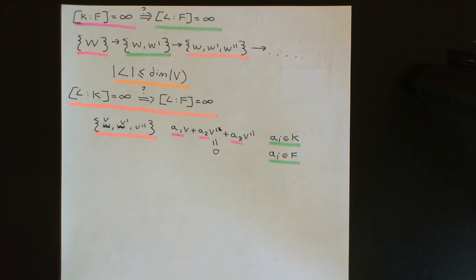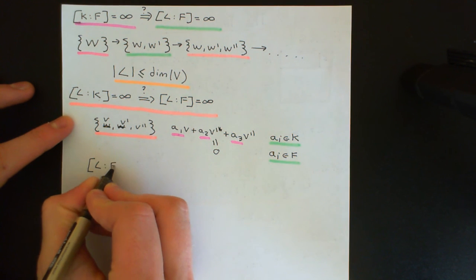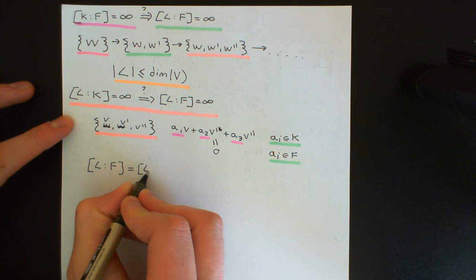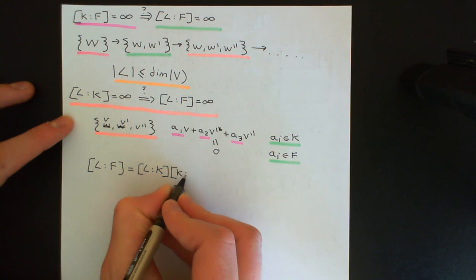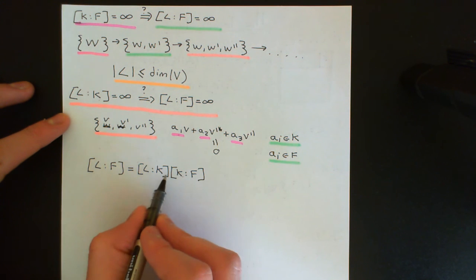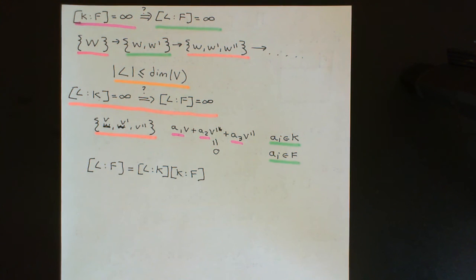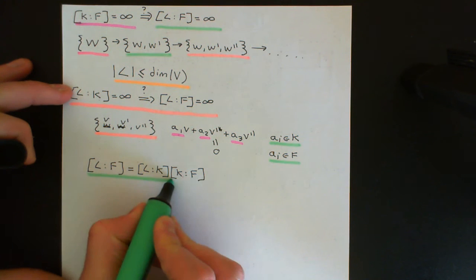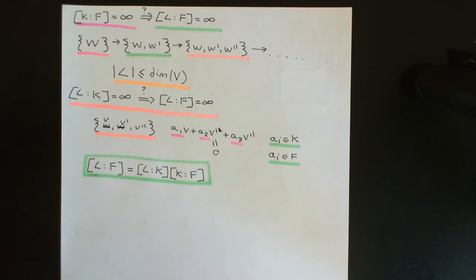So overall, what we have now shown is the Tower Law: the degree of L over F equals the degree of L over K times the degree of K over F. This works whether these degrees are finite or either is infinite, provided we accept that infinity times anything is equal to infinity. This is the Tower Law, and it's an incredibly important result for future videos in this playlist on field theory.